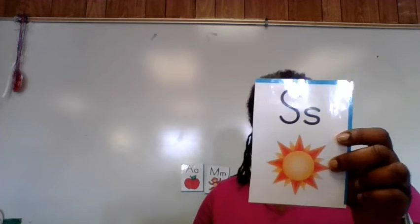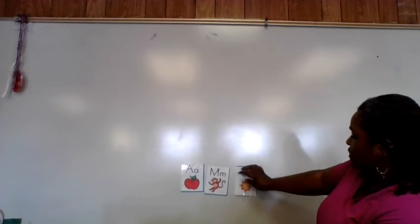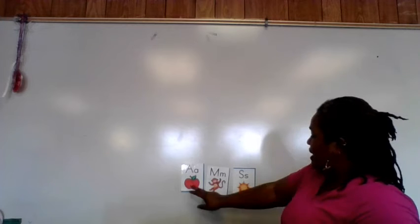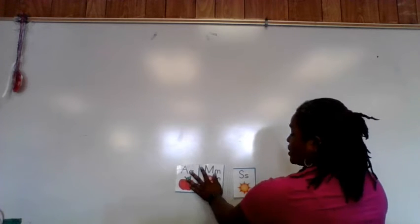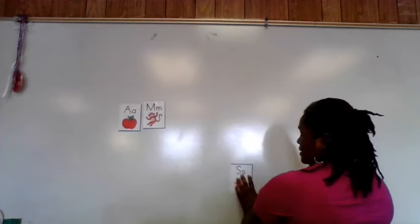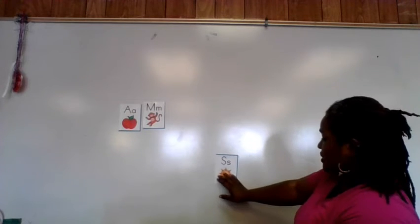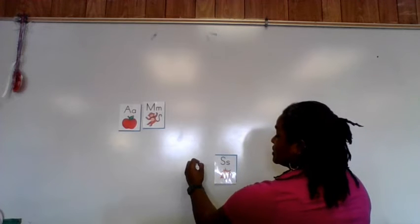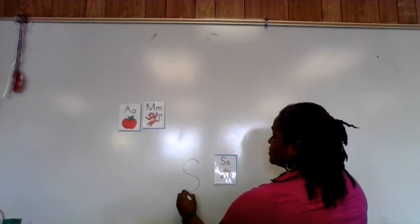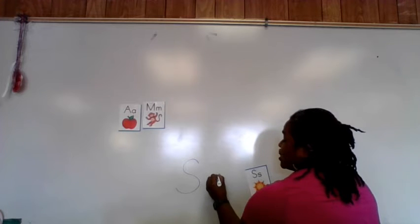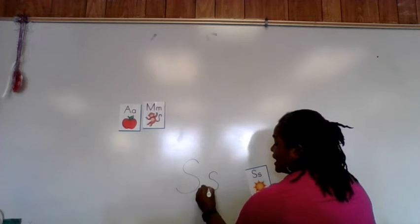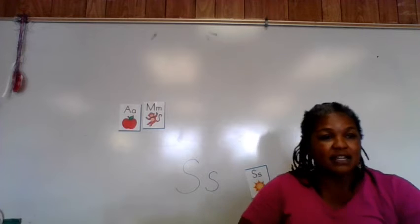S. This is our new letter. S. S makes the S sound, like sun. I'll put it on the board. We're going to practice writing the letter S. Start at the top, circle around, down, stop. Let's do a lowercase s: start in the middle, circle around, down, stop. That is the letter S.